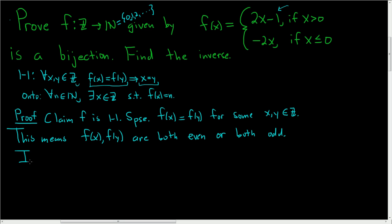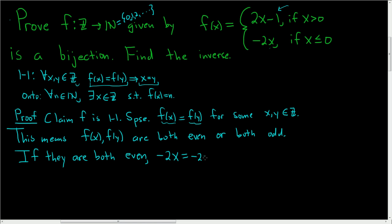If they are both even, that means f(x) is equal to negative 2x, and that equals negative 2y. So x is equal to y — we just divide by negative 2. So we're done if they're both even.